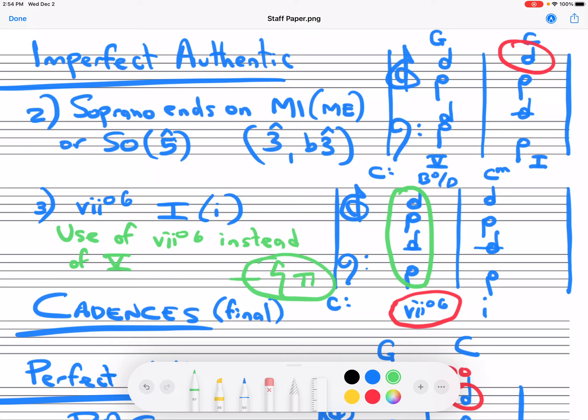So never double the leading tone T. The reason for this is that T, as you may remember, always wants to go to Do. So T to Do is the normal resolution, seven to one. So when you hear this, it wants to resolve up. If you double it, it's implying parallel octaves. So double anything but seven in this chord.